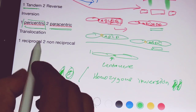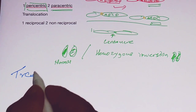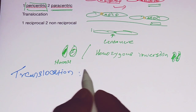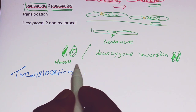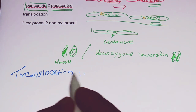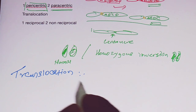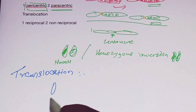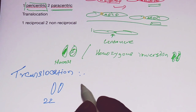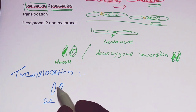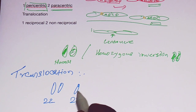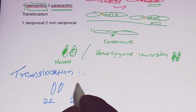Now we will move on to the final topic: translocation. What is a translocation event? When two non-homologous chromosomes exchange their parts, the resulting chromosomal rearrangements are translocations. For example, if this is chromosome number 22, it will be in a pair — that is a homologous chromosome. Whereas one chromosome from pair 22 and one chromosome from pair 23 together form a non-homologous pair. That is the difference between homologous and non-homologous chromosomes.